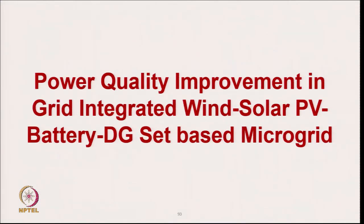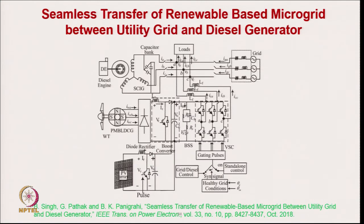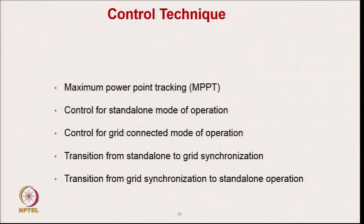Coming to power quality improvement in grid-connected wind-solar PV-battery-DG set based microgrid — a more reliable system. We have a grid, a DG set to reduce the size of the battery, a battery, wind generation, and solar generation. This makes the system reliable: either you can synchronize to the grid or to the DG set if there is not enough energy from solar generation, wind generation, and battery. Controls include MPPT for solar, external mode control, grid-connected mode control, and transition between external and grid modes of operation.